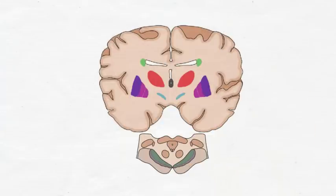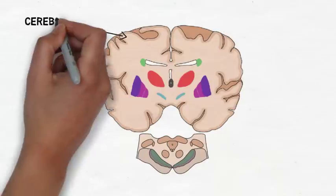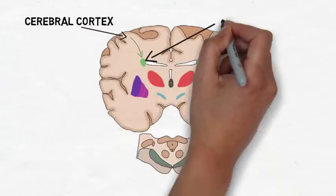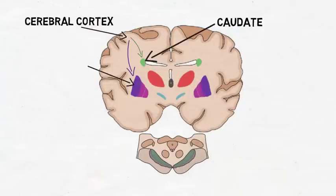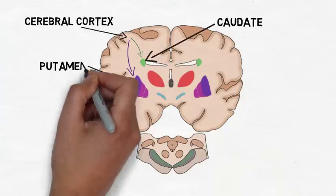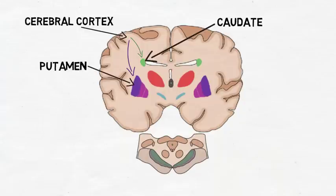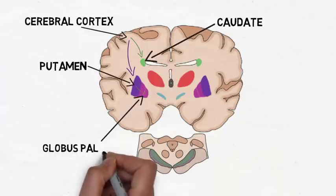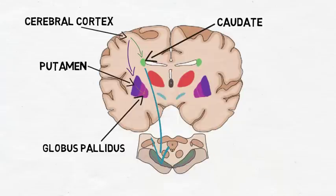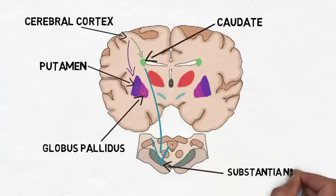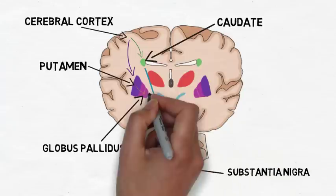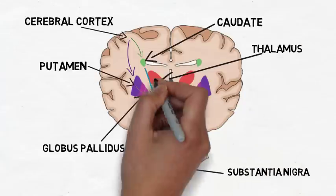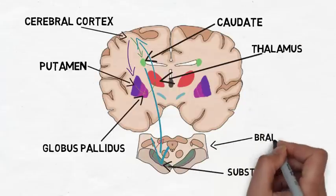Much of the information the basal ganglia receives comes from the cerebral cortex and travels first to the caudate or putamen, the main input nuclei of the basal ganglia. The globus pallidus and substantia nigra are the main output nuclei, and they send projections out from the basal ganglia to the cerebral cortex, mostly by way of the thalamus, as well as to nuclei in the brainstem.